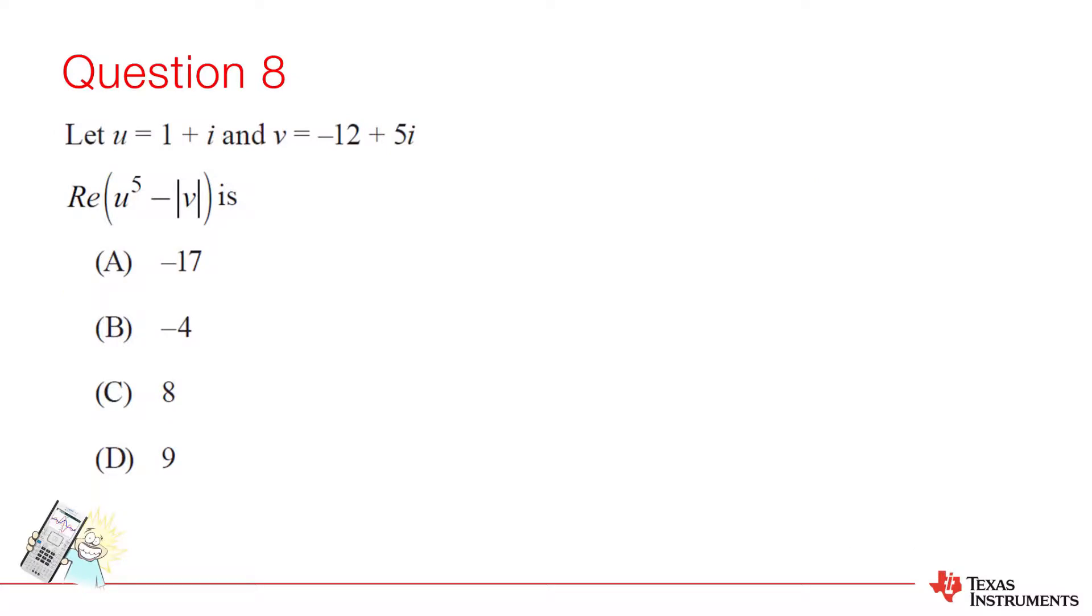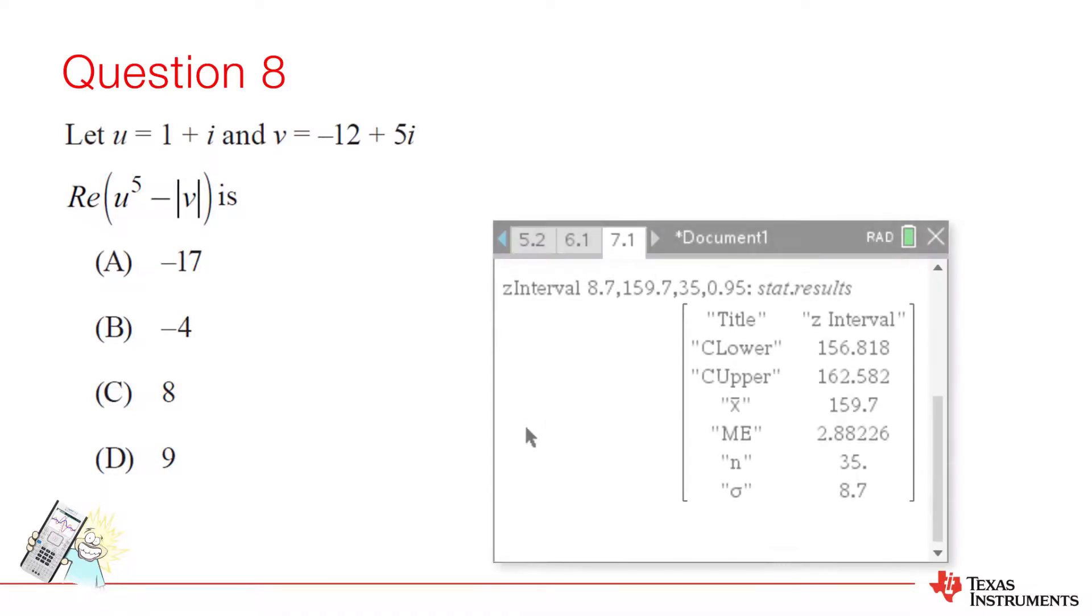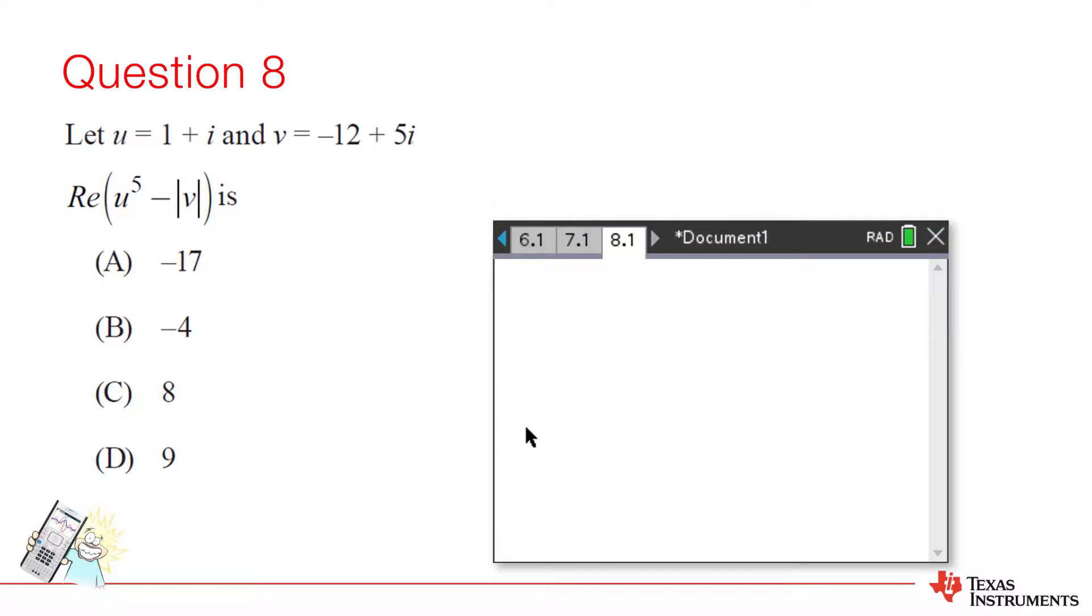Question 8. This is a simple problem to solve on the calculator. Perhaps a clue that we should head towards a calculator is the power of 5. For by hand calculations, you would be better expressed in polar form. Whilst this is a relatively easy conversion in this case, it's not necessary on the calculator. We can store the values in U and V. Now simply enter the expression. So you can see the answer is negative 17, which is option A.